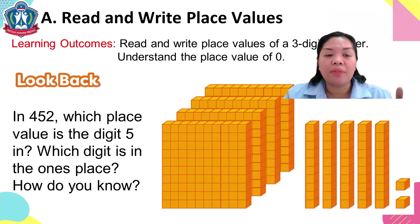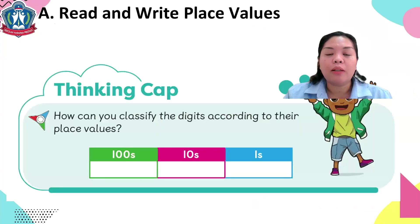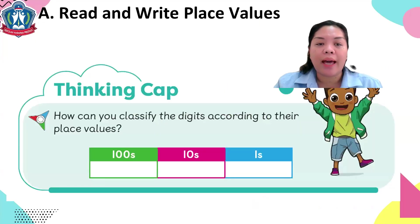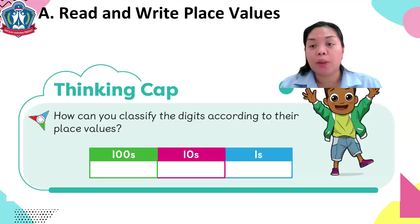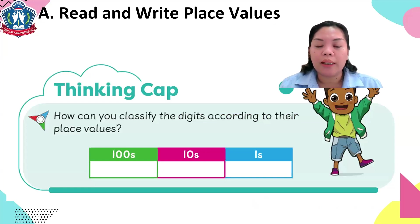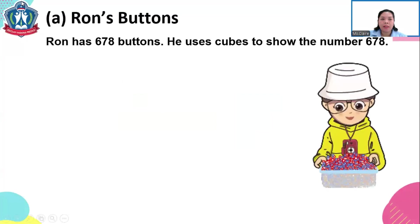We have 452, so the digits are 4, 5, and 2. Now look at our thinking cap — how can you classify the digits according to their place values? In P2, do you remember what the place values are? Continue watching this video and I will discuss more about this.